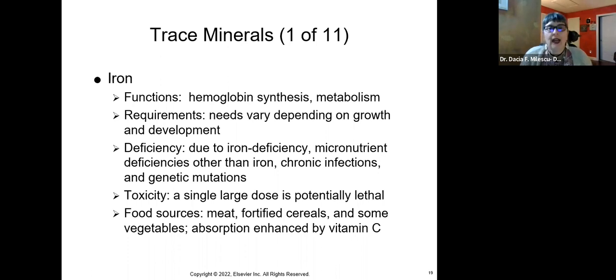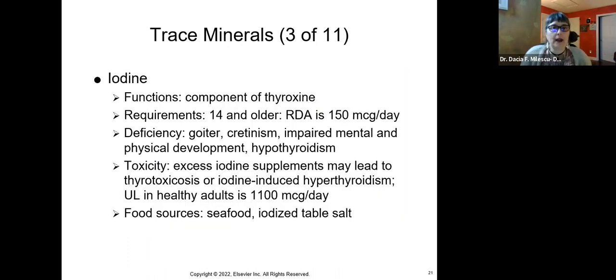Now, if you want to get iron naturally, obviously everyone knows eat more spinach, meat, fortified cereals, some vegetables. And by the way, if you put on your spinach salad, you put some lemon juice on there or squeeze a lemon or cut up some oranges, good for you because the vitamin C in these citrus fruits will enhance the absorption of iron.